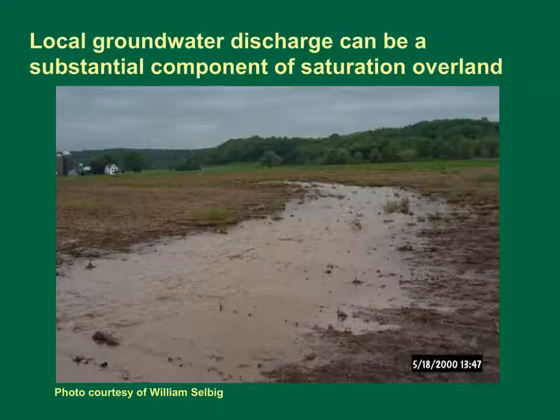Similarly, this photograph of a farm field next to Black Earth Creek in Cross Plains, Wisconsin shows the effects of groundwater discharge on saturation overland flow. The rising water table contributes flow from the low spots near the stream network. Precipitation falling on such areas also contributes to runoff.